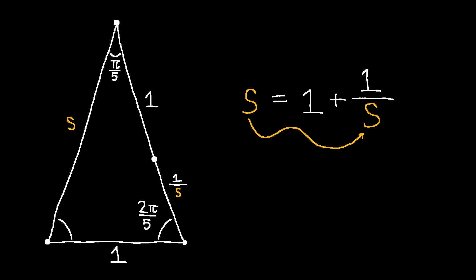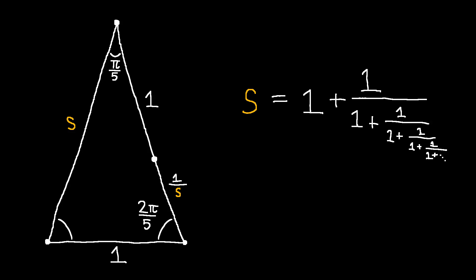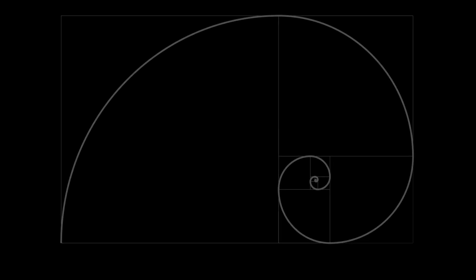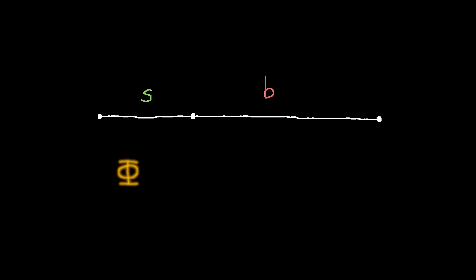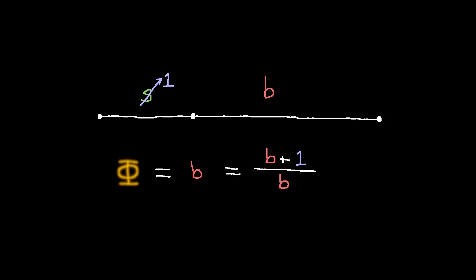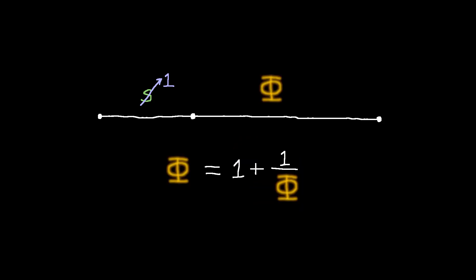Curiously, it seems like we can plug s into itself to get that s equals 1 plus 1 over 1 plus 1 over 1 plus 1 over itself, on and on forever. And here is where the true identity of s reveals itself. By definition, when two lengths are in the golden ratio, it means that the ratio from the bigger to the smaller is the same as the ratio from the whole to the bigger. If the smaller length is one, then evidently the bigger is the golden ratio itself. So dividing through, we get the exact same equation we got for s — confirming that s is the golden ratio.